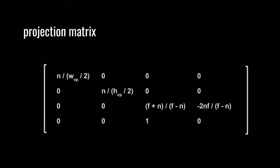What the projection matrix is going to look like is: x gets multiplied by n over half the width of the view plane, y values get multiplied by n over half the height of the view plane, z values get multiplied by (f plus n) over (f minus n) and then we subtract out 2nf over (f minus n), and lastly the w value is just the z value multiplied by 1 - the z value verbatim. That's how we get from view space to clip space by applying this projection matrix.